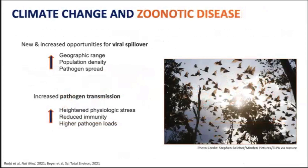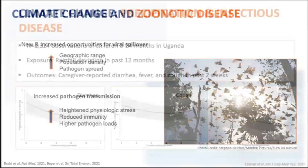An estimated 75% of emerging infectious diseases in humans are zoonotic, and these are also influenced by climate change. Rising precipitation and temperature shifts, combined with human actions like deforestation and urbanization, can shift the geographic range and population density of animal vectors and move them closer to humans and their livestock, creating the perfect opportunity for viral spillover. These conditions can also increase pathogen transmission by heightening physiologic stress in animals, reducing their immunity and heightening pathogen loads. Because of all of this, it's projected that we're entering a new rise in global pandemics related to climate change.